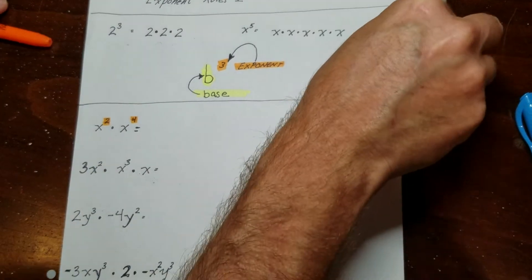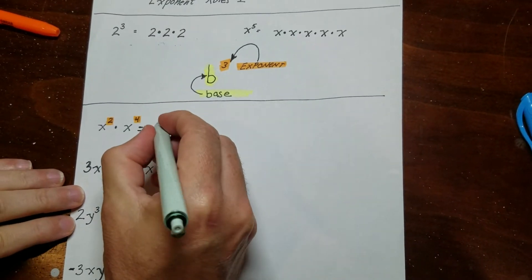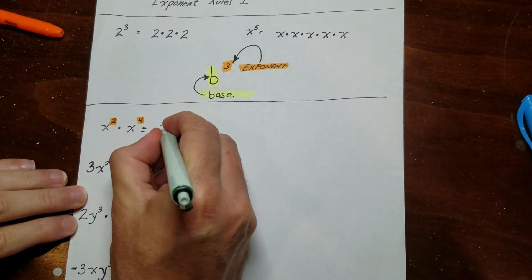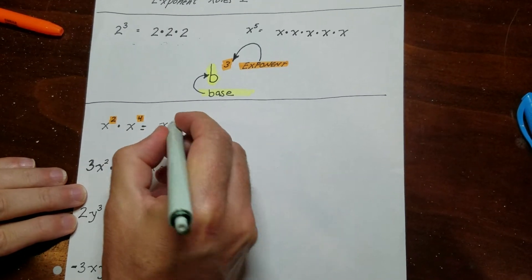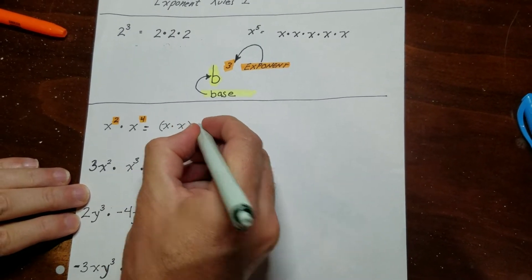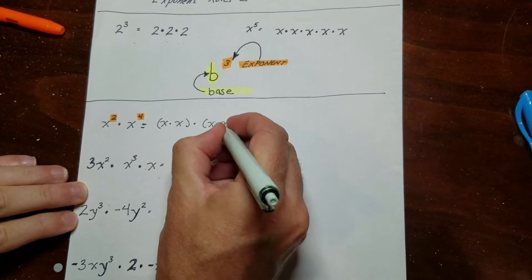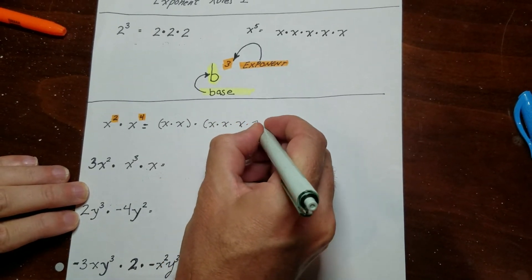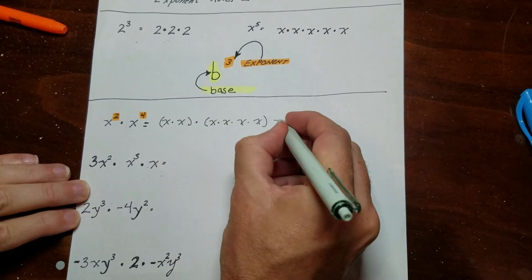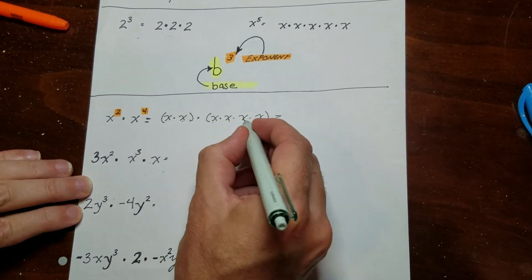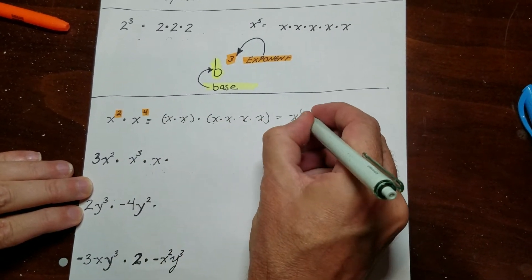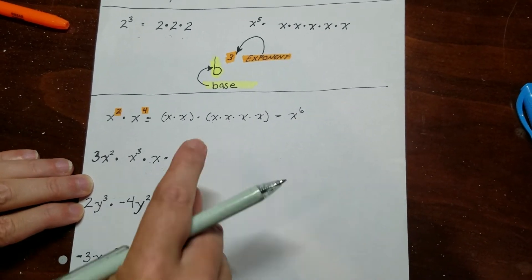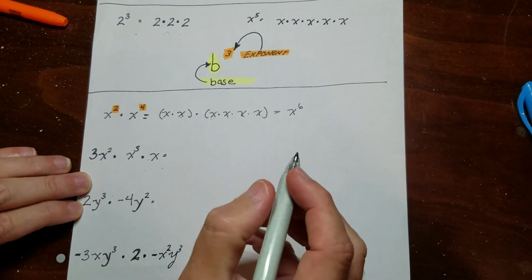So basically all you're going to do is this means that there's 2 of them times there's 4 of them. And then if I add them all up, 1, 2, 3, 4, 5, 6, you can see that there's a total of 6 of them. So is there a way to do this without writing it out like that? Absolutely there is.